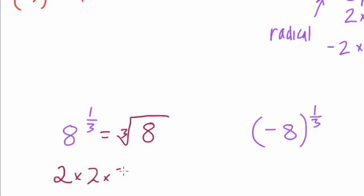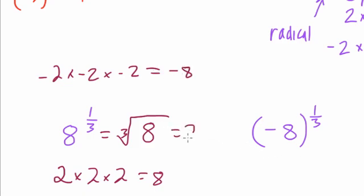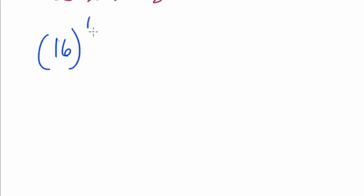However, negative 2 times negative 2 times negative 2 equals negative 8, right? So it doesn't equal 8. There's only one root, and that's 2. And, in fact, it leads to the next one. Here, if we're taking the third root of negative 8, the answer is just negative 2. For that same reason, that negative 2 times negative 2 times negative 2 is negative 8.